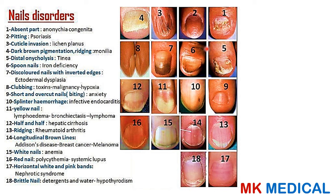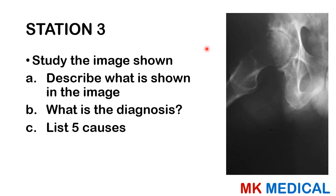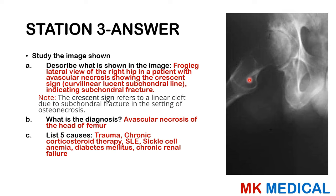Coming to station three: study the image shown. Describe what is shown in the image, what is the diagnosis, and list five causes. Here comes the answer: this view is known as a frog-leg lateral view of the right hip. On this X-ray we can see something is going on especially in the head of the femur — this patient has what is known as avascular necrosis of the head of the femur.